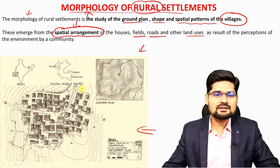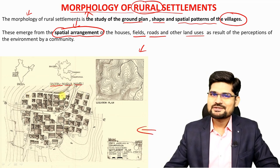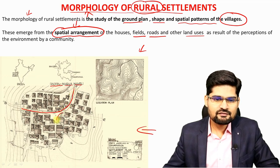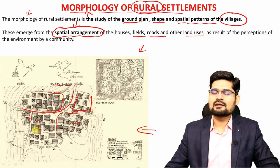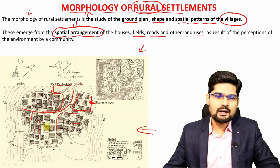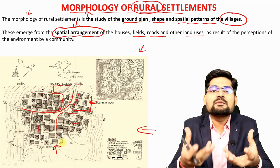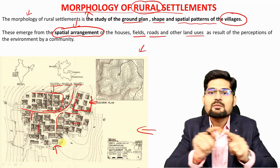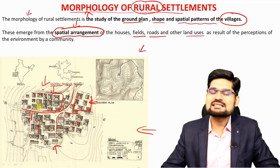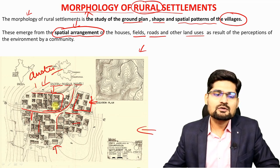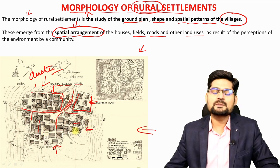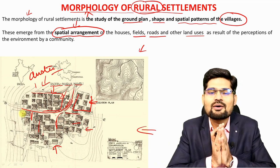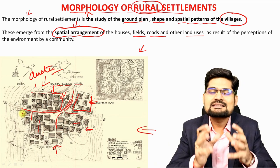Now looking at this particular map — a settlement plan of Dadar Nagar Haveli — you can observe a road opening into by-lanes, with housing arranged on various sides. The spacing of housing differs in different parts. This is what we call the settlement plan, which talks about spatial morphology. The morphology of this settlement looks like a cluster — houses arranged in close spacing, divided by roads and by-lanes, with some areas more congested than others.